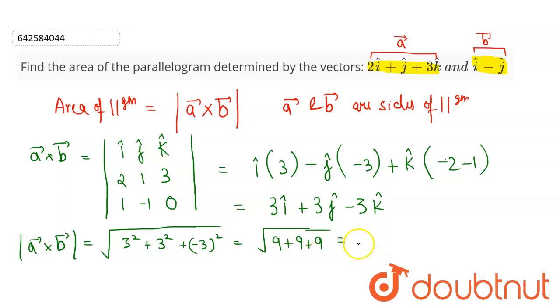So this is equals to under root of 27 and this can be written as 3 times of root 3. So area of parallelogram is 3 root 3 square units. So this completes our solution.